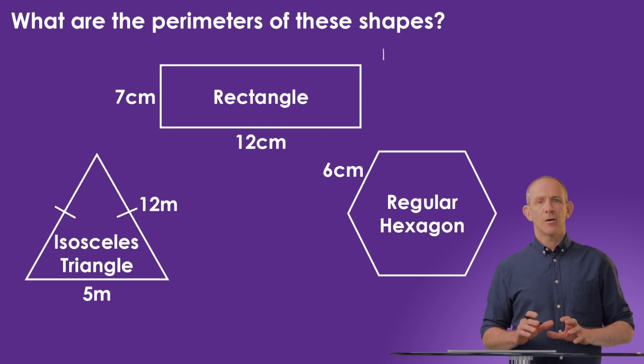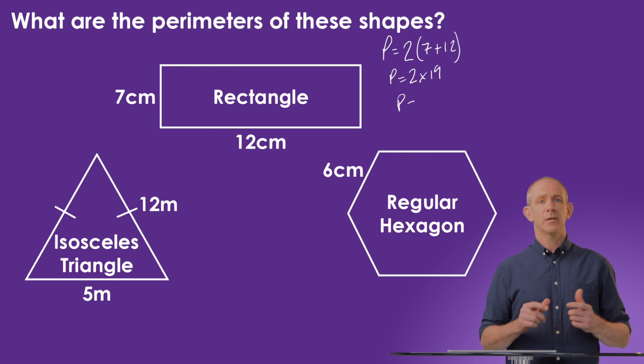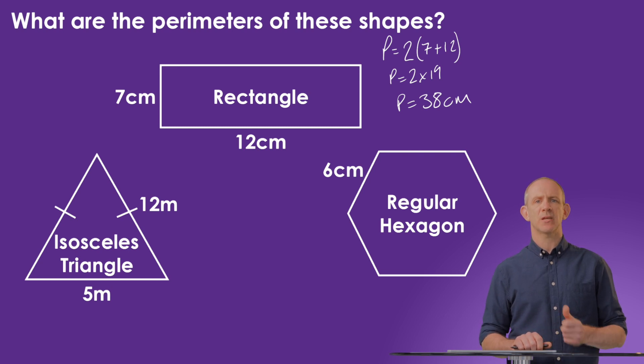In the next example we have a rectangle measuring seven centimeters by 12 centimeters. So we can calculate the perimeter using our formula as before. P equals 2 times 7 plus 12. That's P equals 2 times 19, which would give us 38 centimeters. In calculating that perimeter we use the measurement of centimeters because it's a length, and therefore single dimension. So the power is going to be 1, which we don't write.